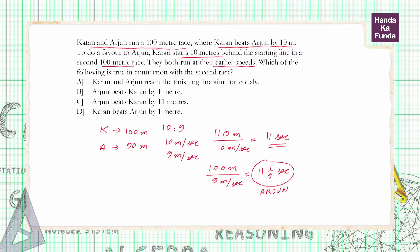taking more time, so if Arjun is taking more time, who will win the race? Karan will win the race. Now we look at the options. In only one option we have that Karan wins the race, that is option D, and that will be our answer.